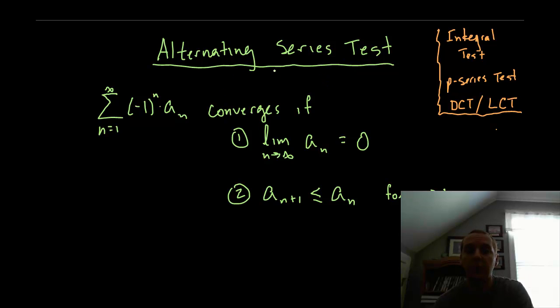Now this is one of the few tests that actually handles negative terms in a series. If you look back through some of the other tests that we have already covered, the integral test demanded that you have positive terms only so that wouldn't work. The p-series test, same thing, says you need to have all positive terms. Same thing for the direct comparison test, same thing for the limit comparison test. There are only a few tests like the ratio test and the geometric series test which handle negative numbers like this.